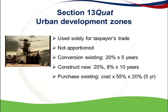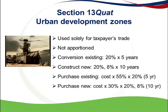When the costs were incurred by the developer and the taxpayer merely purchased the converted or new building situated in an urban development zone, then the allowance can only be calculated on part of the purchase price. If the taxpayer purchased an existing building, the cost price must first be multiplied by 55% before the 20% allowance for 5 years is applied. If the taxpayer purchased a new building, the cost price must first be multiplied by 30% before the allowance of 20% in the first year and 8% in the following 10 years is applied.